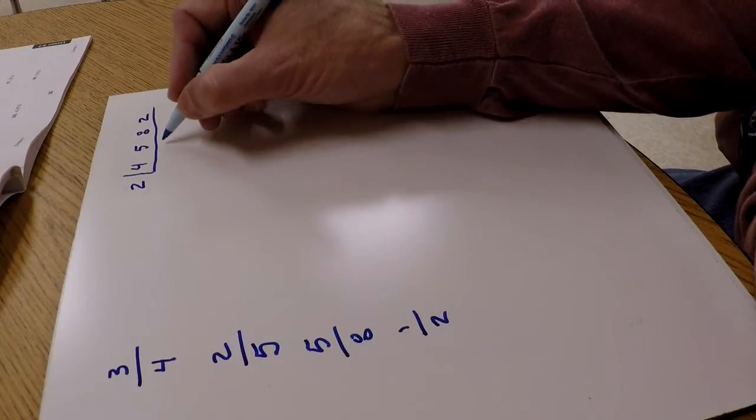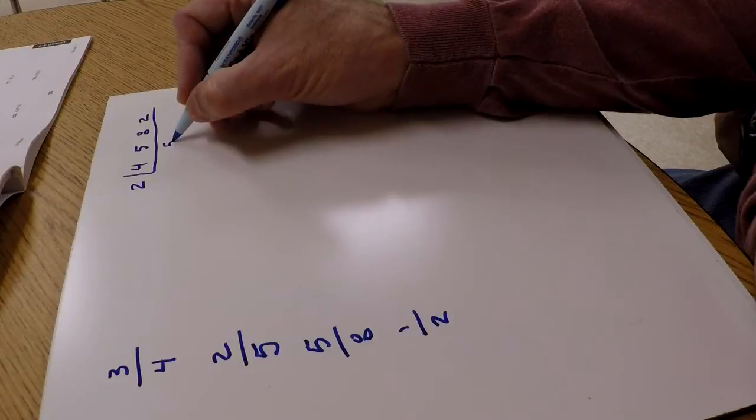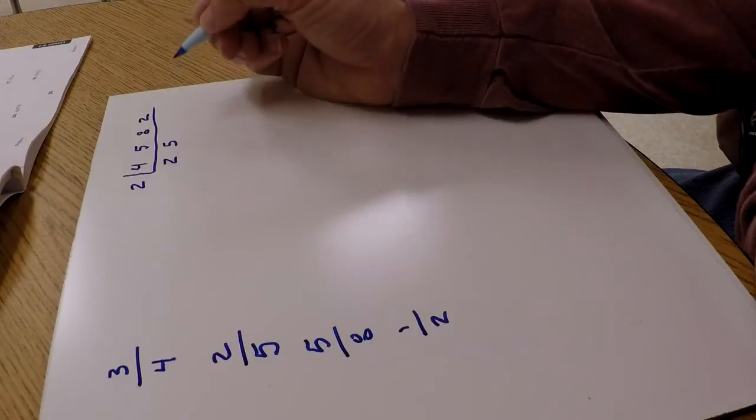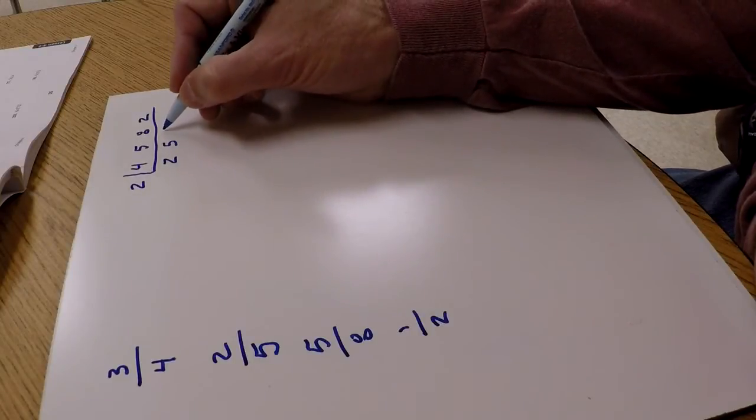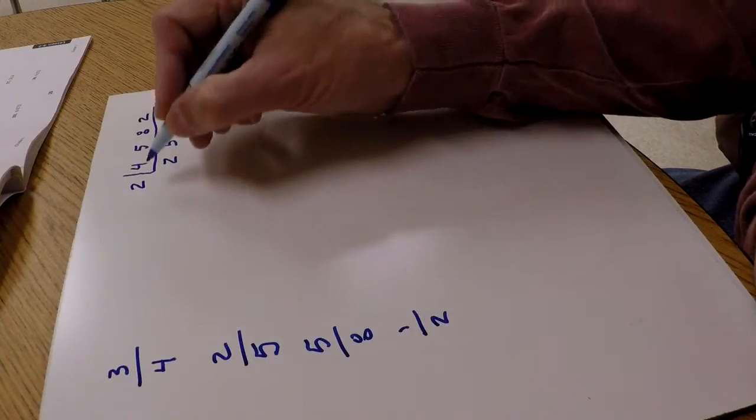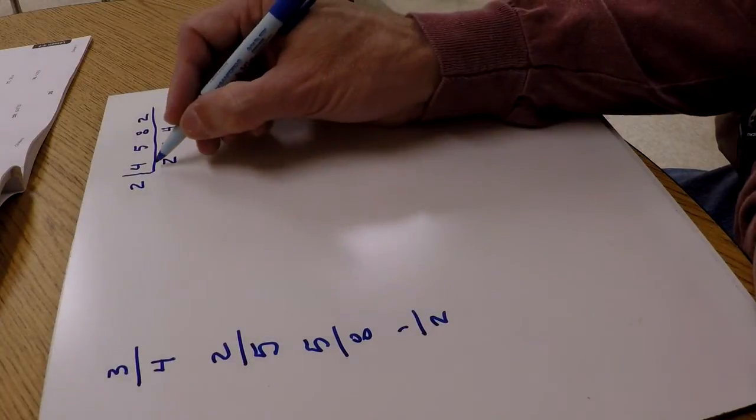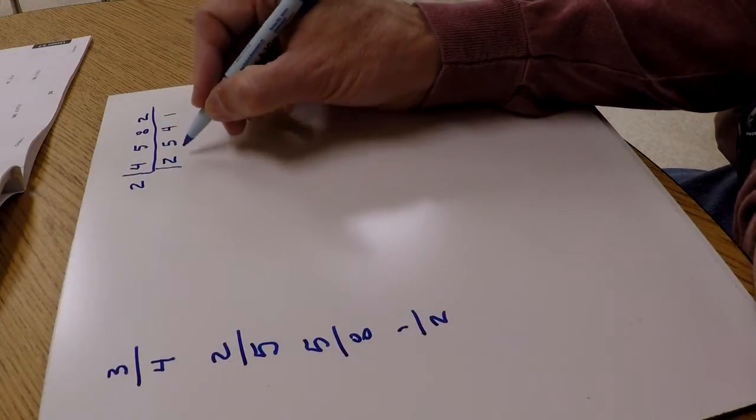2 going into 4 is 2 times, 2 going into 8 is 4 times, 2 going into 2 is 1 time. Then I just ask myself again, is there any number, a smaller prime number, that will go into any of these?